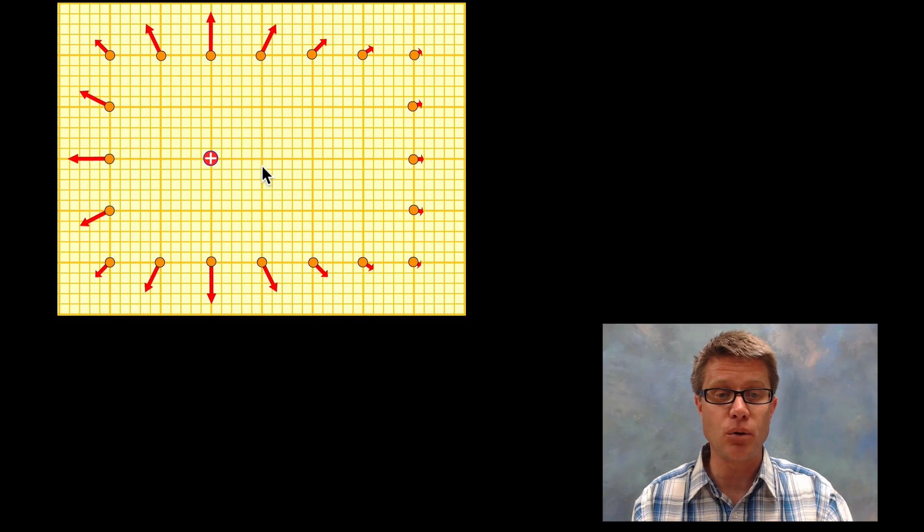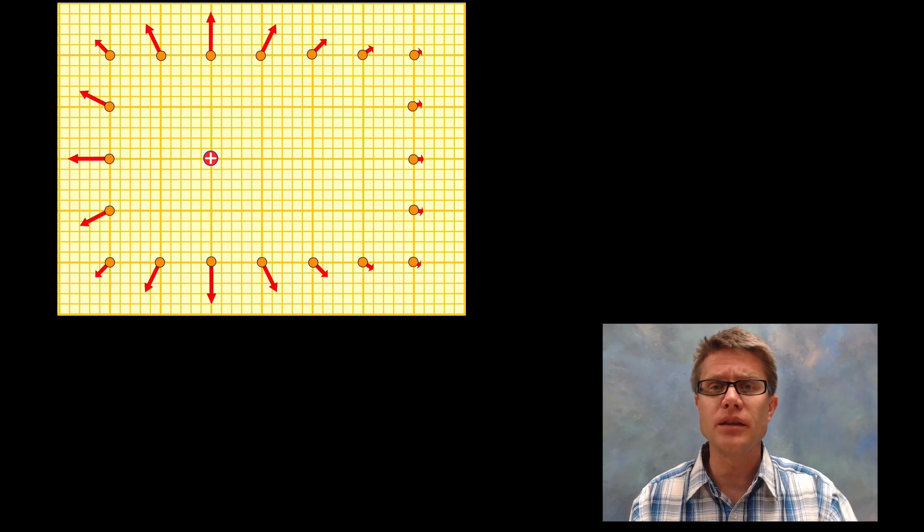What I've got here is a monopole. We put a positive charge right here and then we have these E sensors around the outside. What they're measuring is the strength of the electric field. You can see as we move farther and farther away the strength of the electric field is going to drop off.